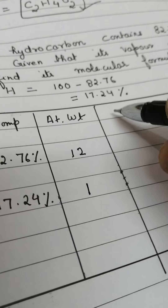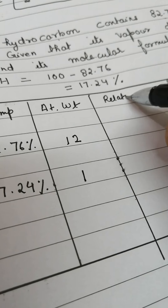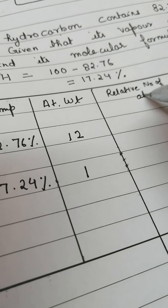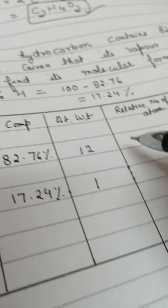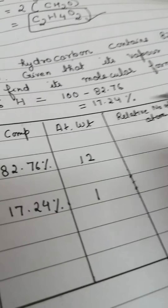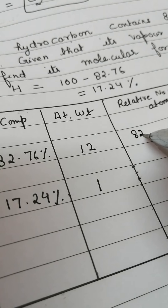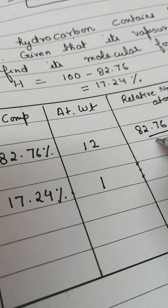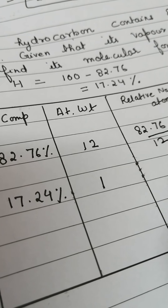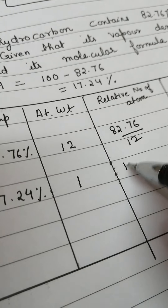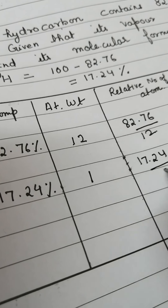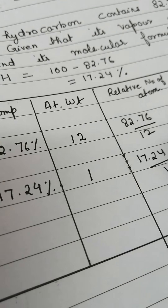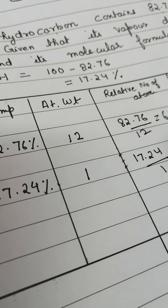The next column is the relative number of atoms. To calculate this, we divide the percentage by the atomic weight. So for carbon: 82.76 divided by 12 gives 6.89. For hydrogen: 17.24 divided by 1 gives 17.24.